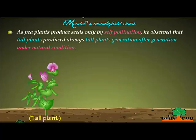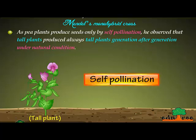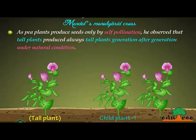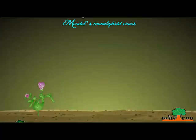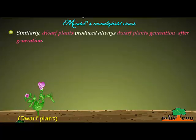Mendel's monohybrid cross. As pea plants produce seeds only by self-pollination, he observed that tall plants produced always tall plants generation after generation under natural conditions. Tall pea plants reproduced through self-pollination, and all child plants were tall. Similarly, dwarf plants produced always dwarf plants generation after generation through self-pollination.